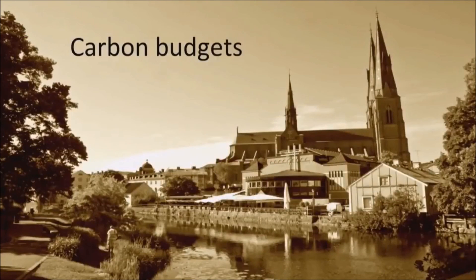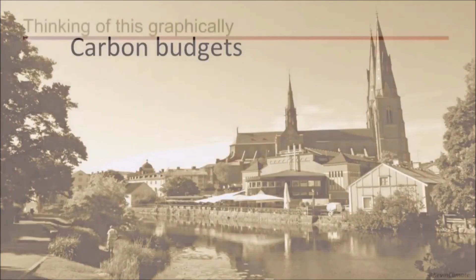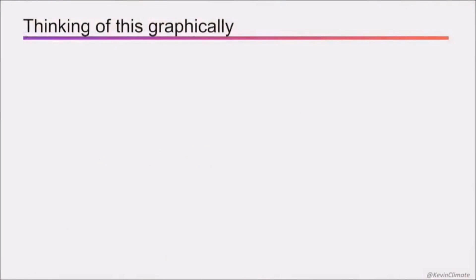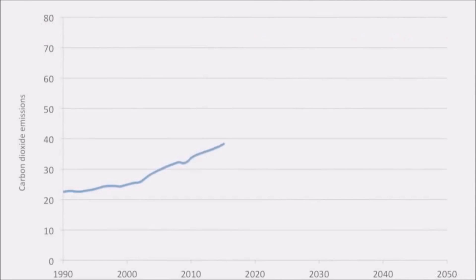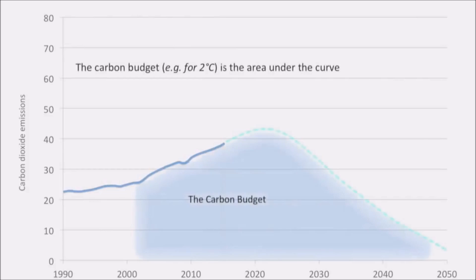Let's go into the carbon budget framing first. Just think of this graphically. We've got some emissions going up here — this is carbon dioxide at the side and the years out at the bottom. What really matters is the area under the curves. This is our total amount of carbon dioxide.